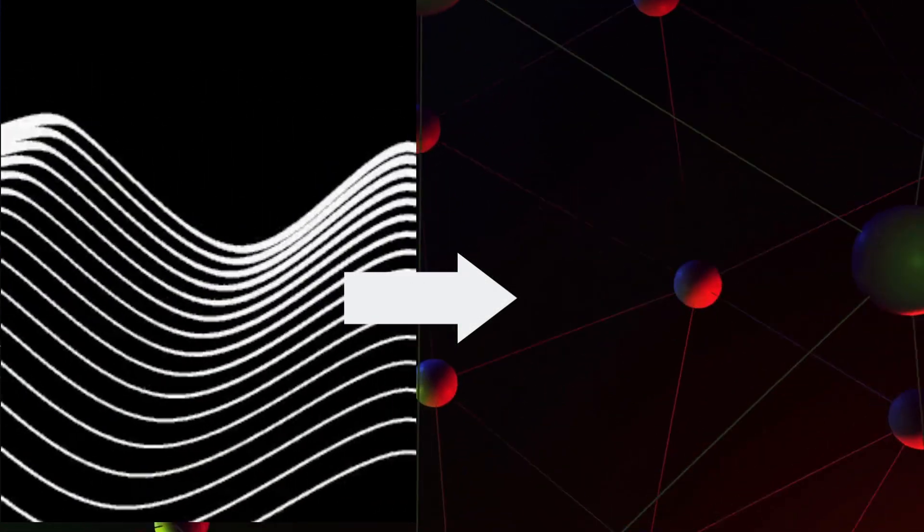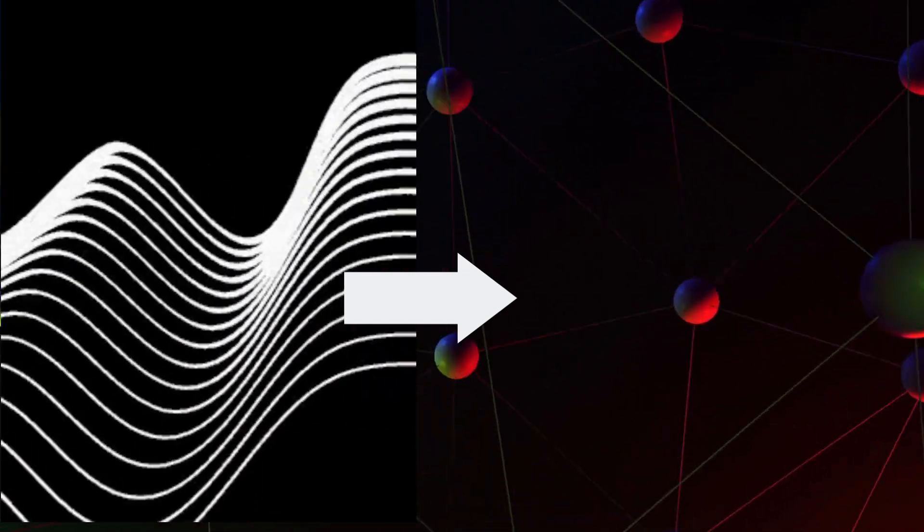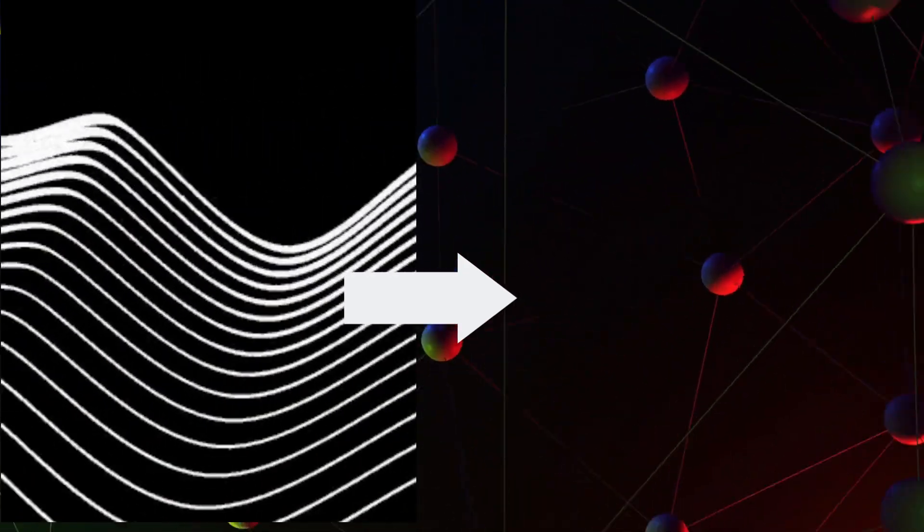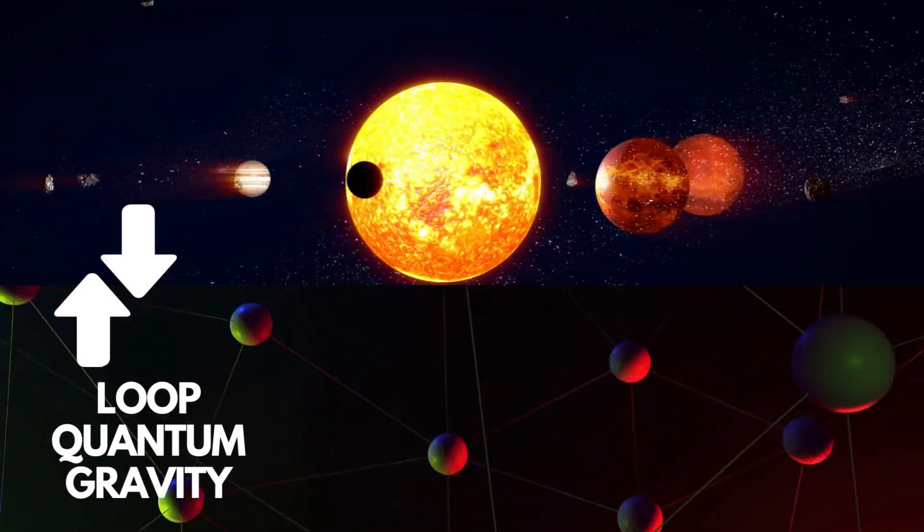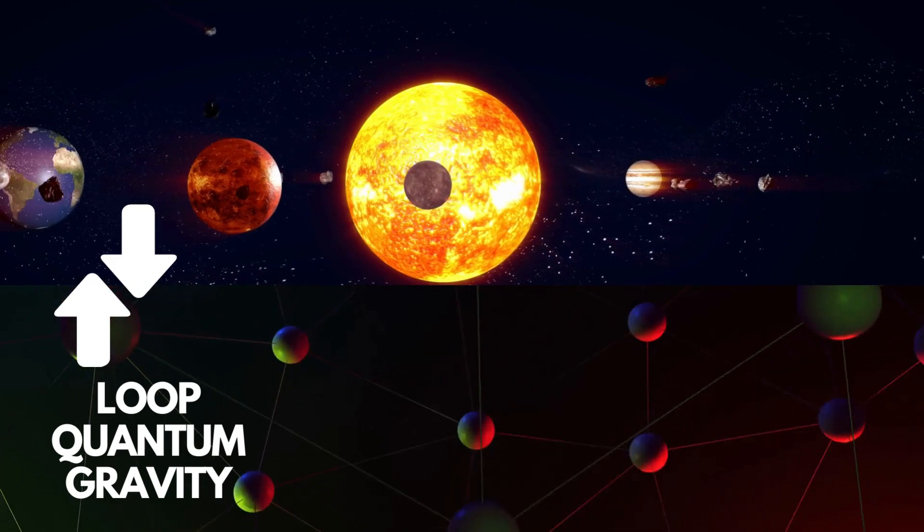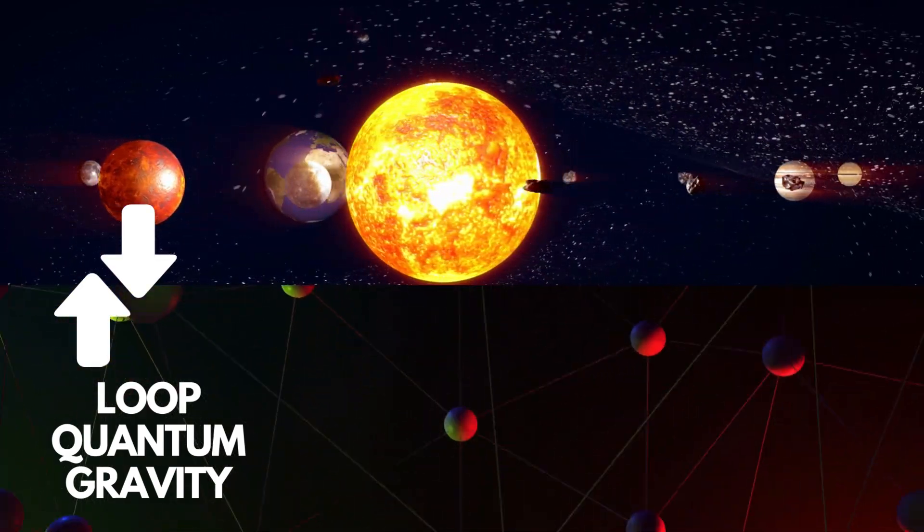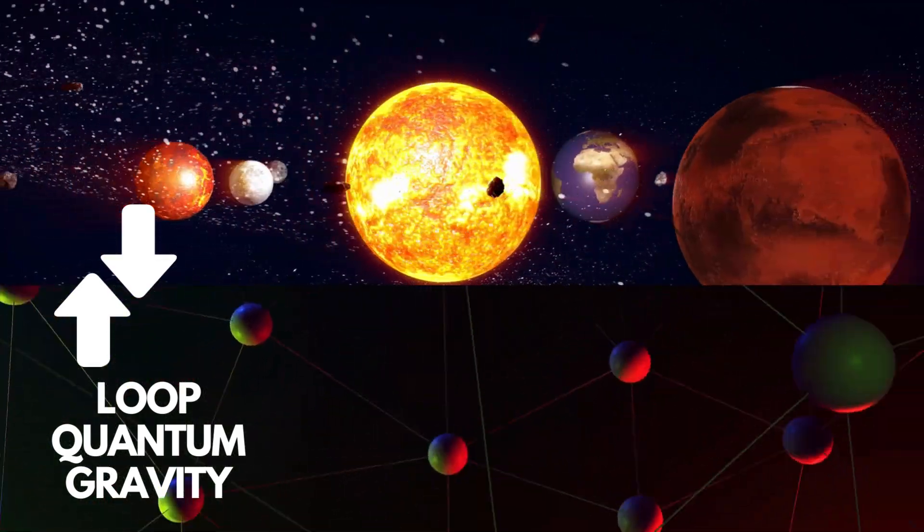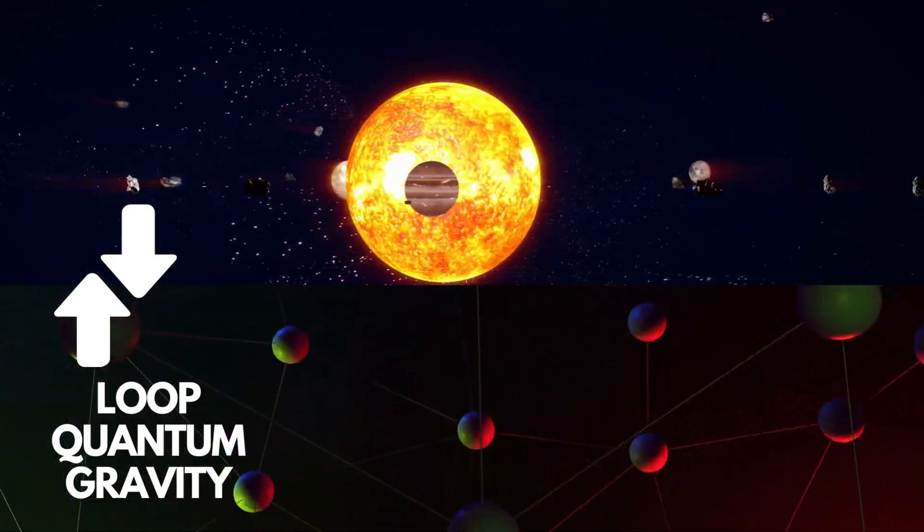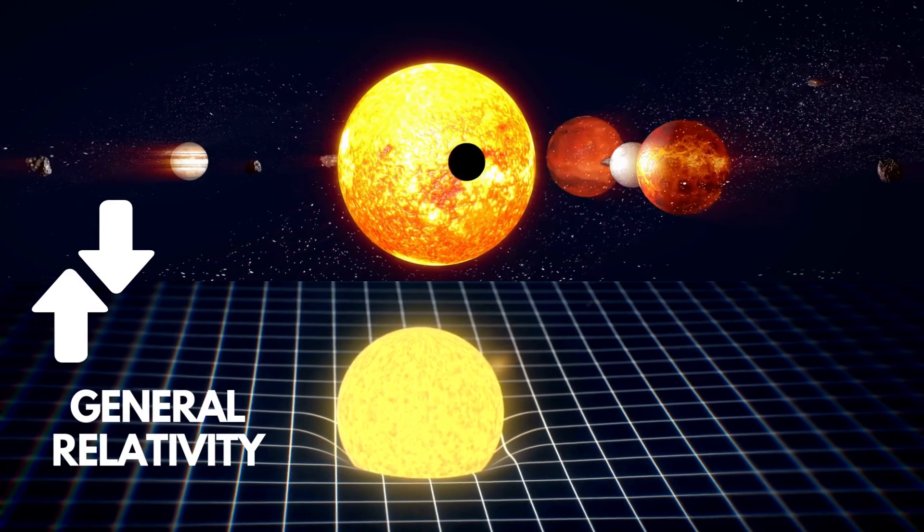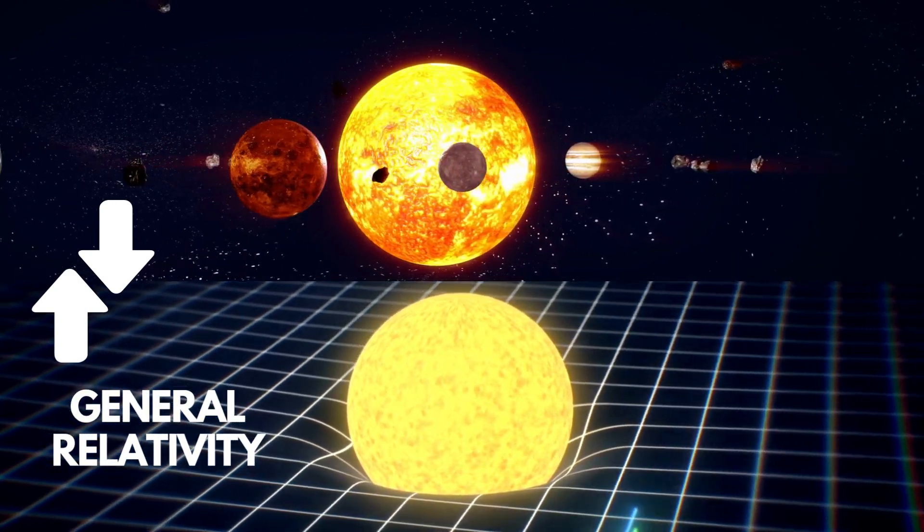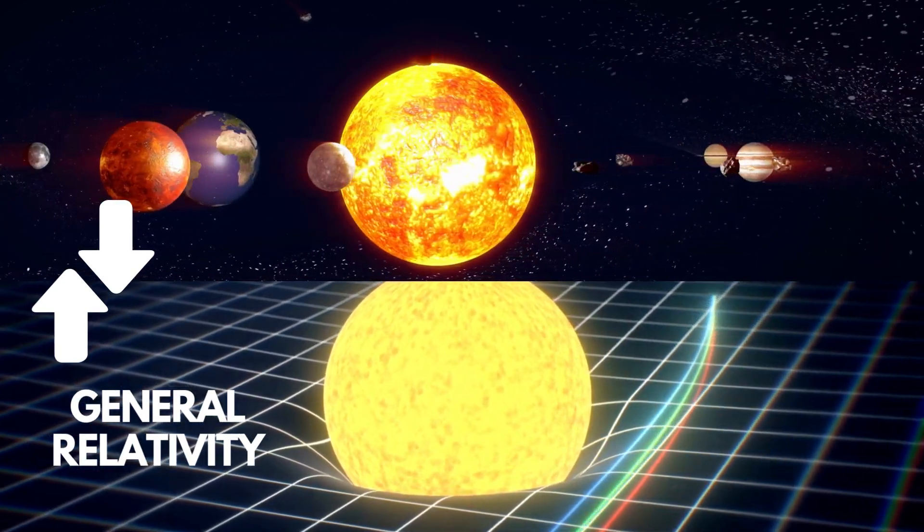But on the other hand, although loop quantum gravity has partially succeeded in quantifying space-time using spin networks, it has not yet shown the same success at normal scales as it did at small scales. The success of loop quantum gravity at normal scales means that when we use this theory in a normal scale case, such as the Earth orbiting the Sun, we can get results similar to those we would get from general relativity or Newtonian physics.